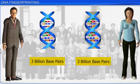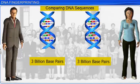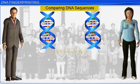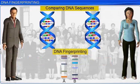An easier and quicker solution to comparing DNA sequences is DNA fingerprinting, which is a test to classify and analyze DNA or the genetic information.